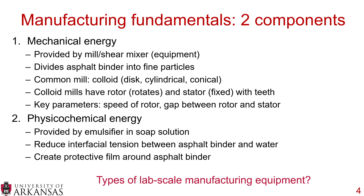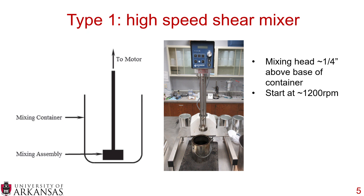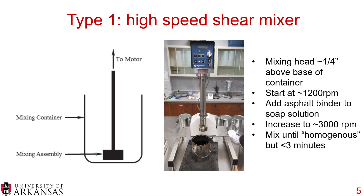What types of lab-scale manufacturing equipment did we use in this study? We used a high-speed shear mixer — basically a container with a mixing assembly hooked to a motor. We placed the mixing head about a quarter inch above the base of the container, started the motor at about 1200 RPMs, added asphalt binder to the soap solution already in the container, and increased to about 3000 RPMs. We mixed until the emulsion was, quote, homogeneous — which is somewhat subjective — but we did not mix for more than three minutes.